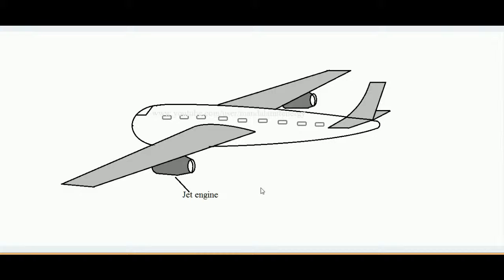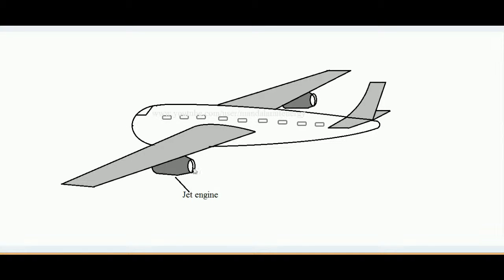Hello students, today we will learn how a jet engine works. A jet engine is a device used to propel an aircraft in the forward direction when it is flying in air. This is a diagram of an ordinary aircraft — these are the wings, and below the wings, these two drum-type capsule-type entities are the jet engines. The job of the jet engine is to propel the aircraft forward.